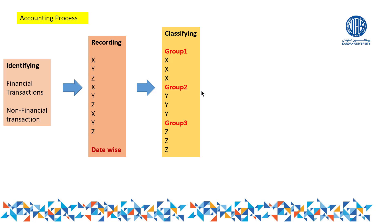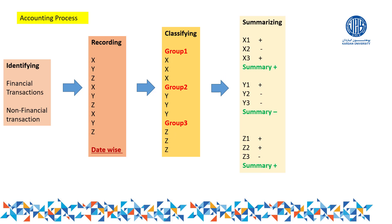So the step of classifying means: first we identified, then we recorded in the book of account, then we classified — group one for X, group two for Y, group three for Z. After classifying, the next step is the step of summarizing.